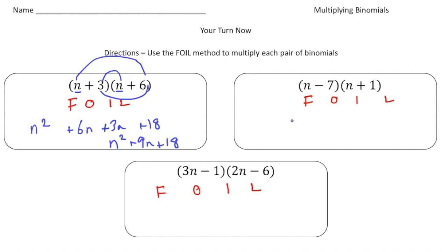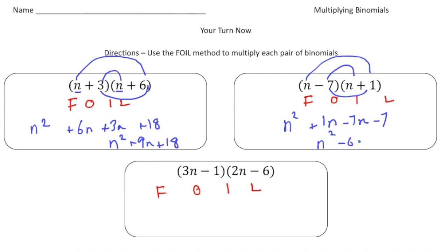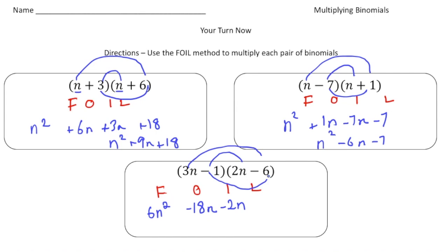For the second problem: First — N times N is N squared. Outside: N times 1 is 1N. Inside: negative 7 times N is −7N. Last: negative 7 times 1 is −7. Simplifying gives N squared minus 6N minus 7. For the third problem, notice there's a different coefficient. First: 3N times 2N is 6N squared. Outside: 3N times negative 6 is −18N. Inside: negative 1 times 2N is −2N. Last: negative 1 times negative 6 is positive 6. So it's 6N squared minus 20N plus 6.